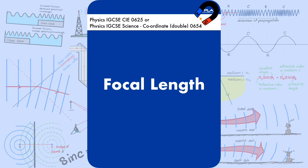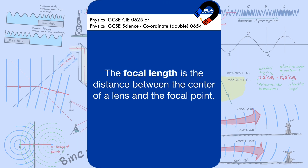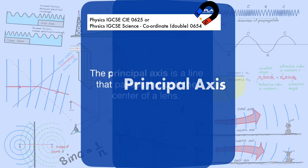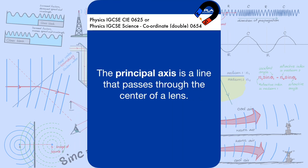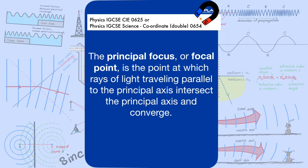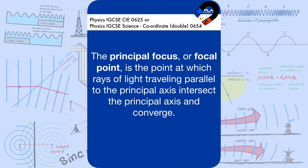The focal length is the distance between the center of a lens and the focal point. The principal axis is a line that passes through the center of a lens. The principal focus, or focal point, is the point at which rays of light traveling parallel to the principal axis intersect the principal axis and converge.